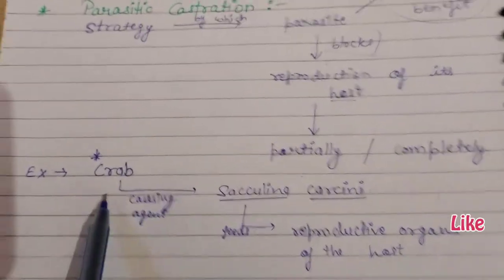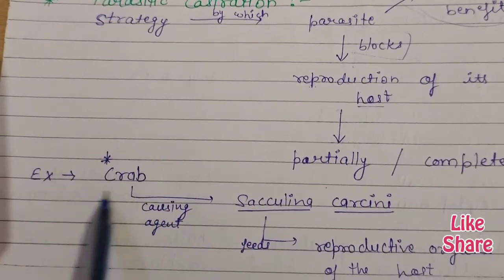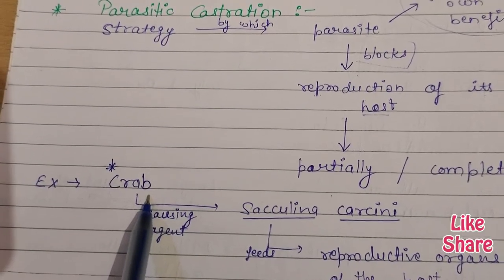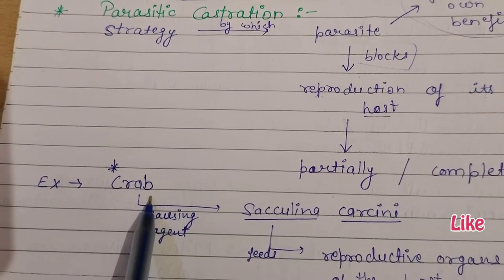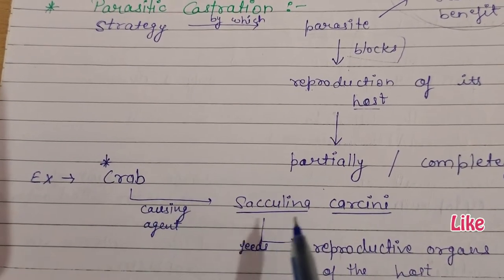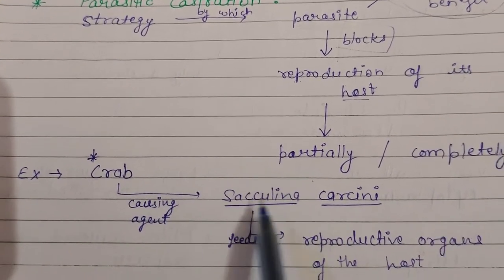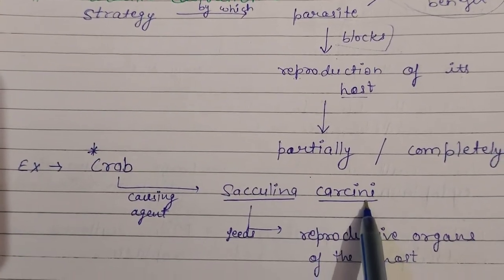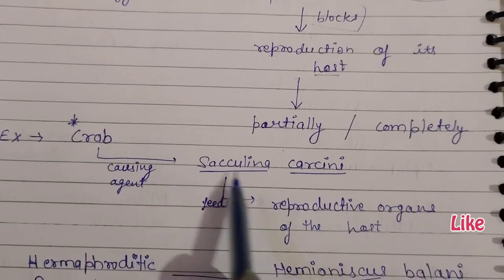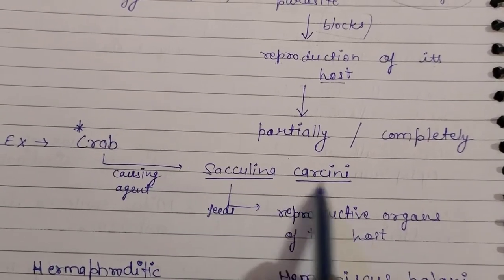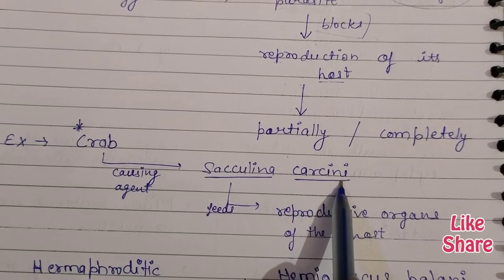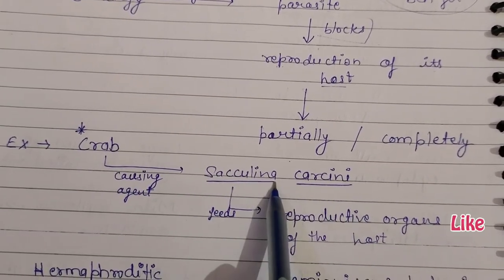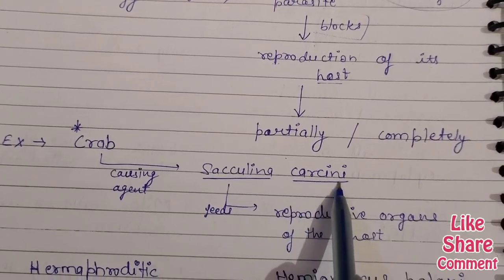The first example is the crab. Parasitic castration occurs in crabs, and the causing agent is Sacculina carcini. Sacculina carcini is the scientific name.